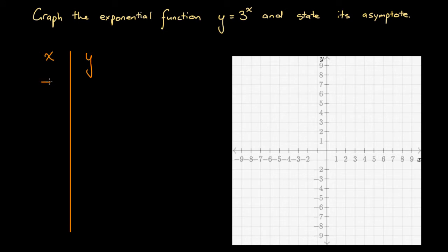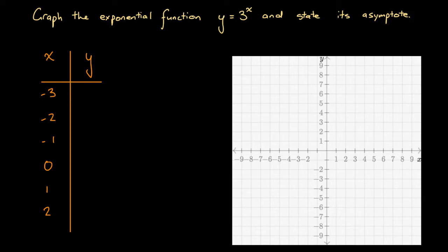Let's consider x values of minus 3, minus 2, minus 1, 0, 1, and 2 as our input values, and evaluate the corresponding y values, then plot each of these on the graph. So we've got y equals 3 to the power of x, and at x equals minus 3, what we're going to have is 3 to the power of minus 3.